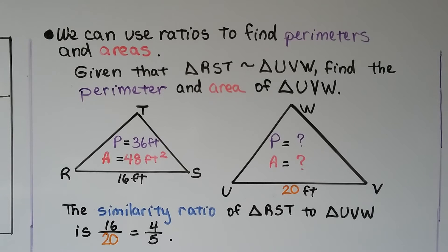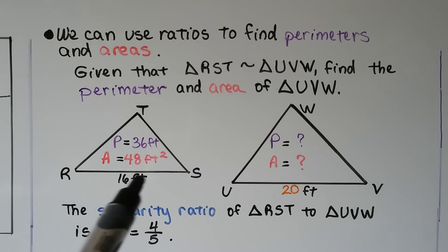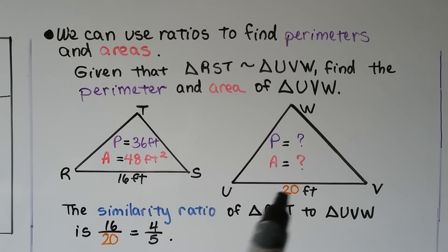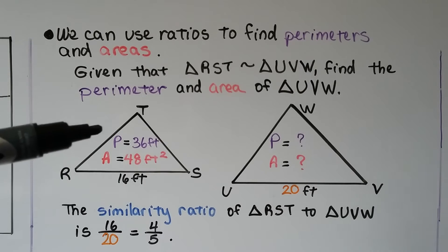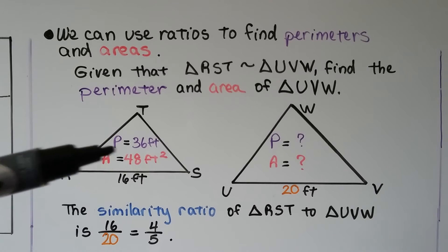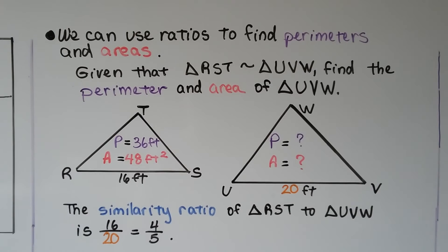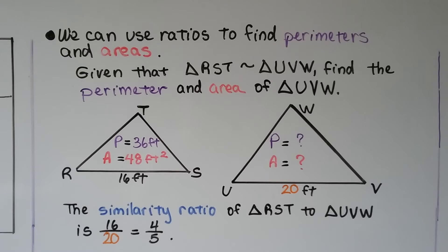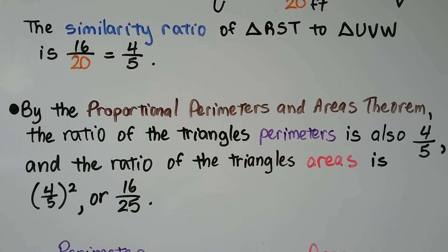We can use ratios to find perimeters and areas. Given that triangle RST is similar to triangle UVW, find the perimeter and area of triangle UVW. We're given a side length of 16 feet and a corresponding side of 20 feet, with the perimeter of RST as 36 feet and the area as 48 square feet. The similarity ratio of triangle RST to UVW is 16 over 20, which simplifies to 4/5. By the Proportional Perimeters and Areas Theorem, the perimeter ratio is also 4/5 and the area ratio is (4/5) squared, or 16/25.